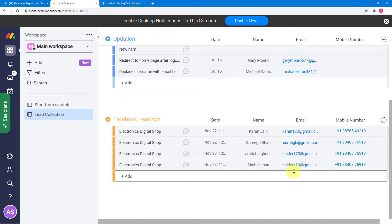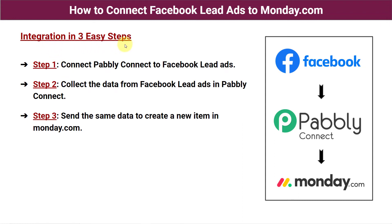You might be wondering how I managed to bring this person into Monday.com without manually adding the data — just by filling the lead ad form the lead gets added to my Monday.com board. Let me give you the easiest possible steps to make this automation. These are the three easy steps: step one is connect Pabbly Connect to Facebook lead ads; step two is collect the data from Facebook lead ads in Pabbly Connect; and step three is send the same data to create a new item in Monday.com.